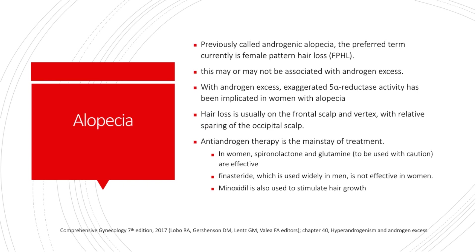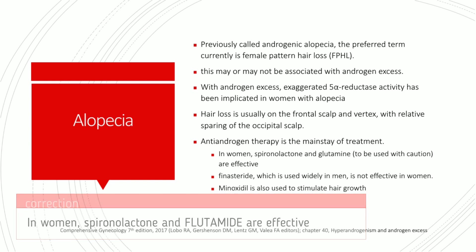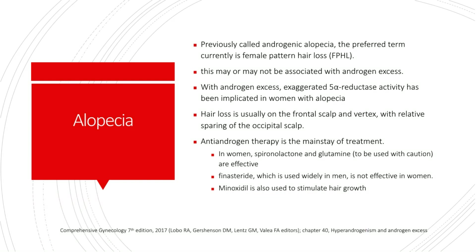For alopecia, previously called androgenic alopecia, the preferred term is now female pattern hair loss or FPHL. This may or may not be associated with androgen excess; with androgen excess, exaggerated 5-alpha reductase activity has been implicated. Hair loss is usually on the frontal scalp and vertex with relative sparing of the occipital scalp. Anti-androgen therapy is the mainstay of treatment — in women, spironolactone and flutamide are very effective; however, finasteride is not effective in women. Minoxidil is also used to stimulate hair growth.